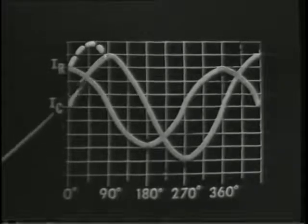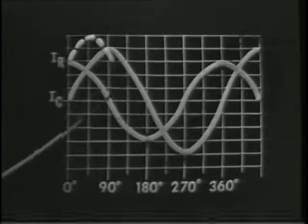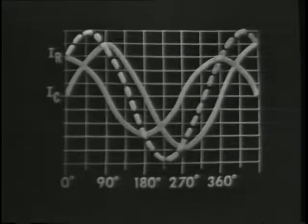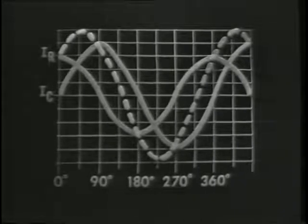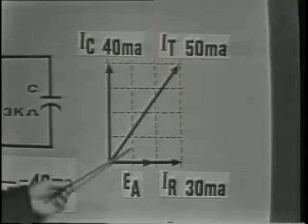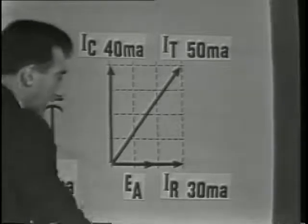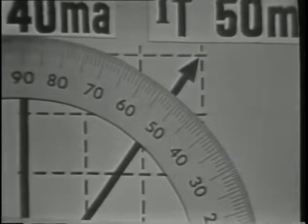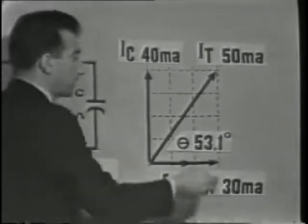At 90 degrees, IR is 0 and IC is 40 milliamps, so that would be the value of the resultant current, and so on throughout the rest of the cycle. The total current is greater than either of the branch currents and less than the arithmetical sum, and the phase difference is something less than 90 degrees. The approximate phase angle may be found by measuring angle theta, which is the angle between the total current and the reference EA. Applying a protractor to the vector drawing, the approximate angle is 53 degrees; the exact angle is 53.1 degrees.